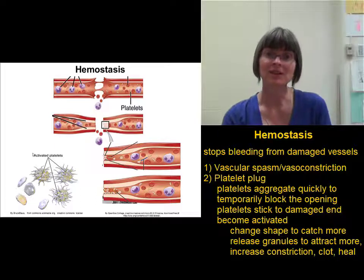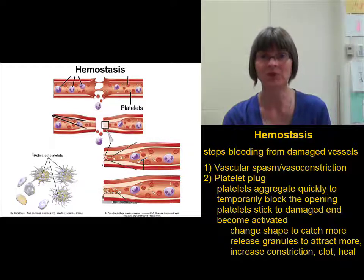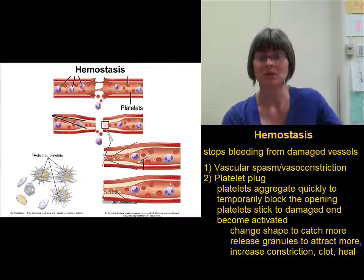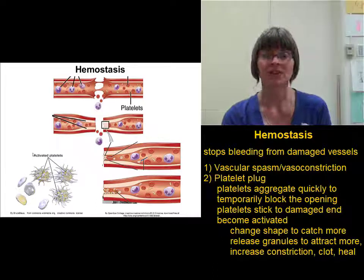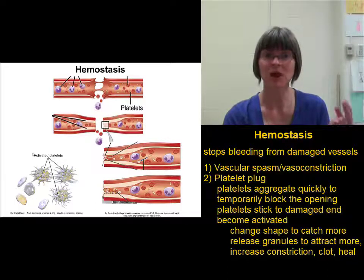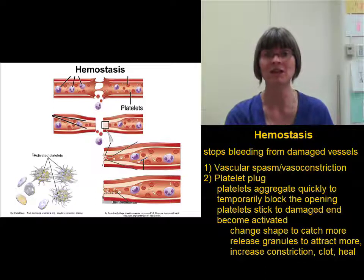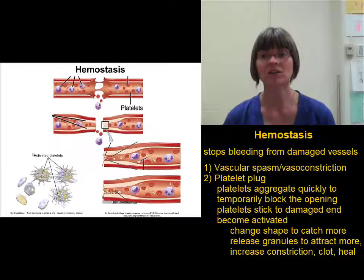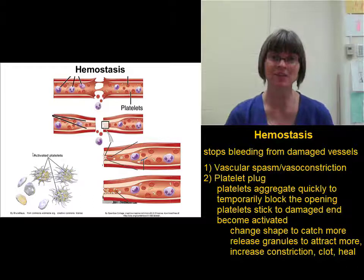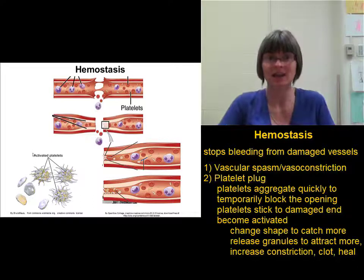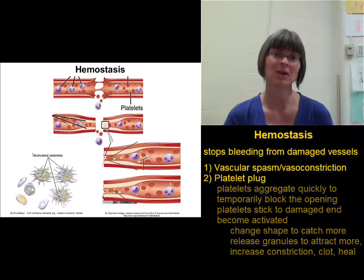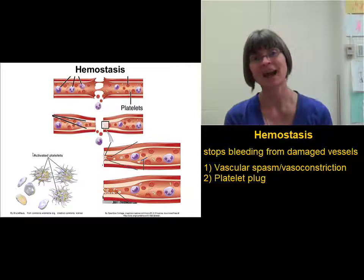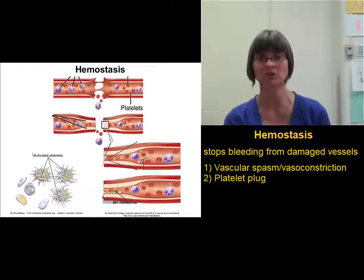The molecules that are released in the platelet granules have a number of roles. We can increase that vascular spasm, attract more platelets, release clotting factors to help with actual blood clot formation, and release growth factors to help with healing. All of these things are being released by the platelets as they degranulate while forming this big platelet plug. The platelet plug will stop the bleeding, but it's not permanent — it's a temporary, fast-forming structure.